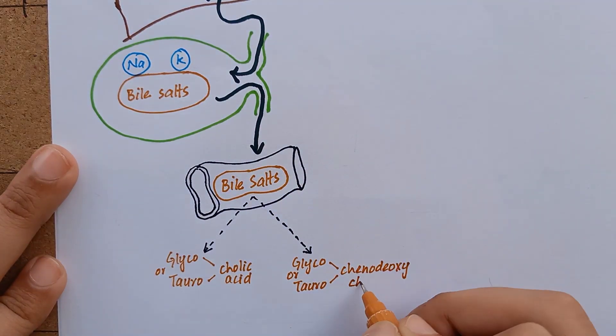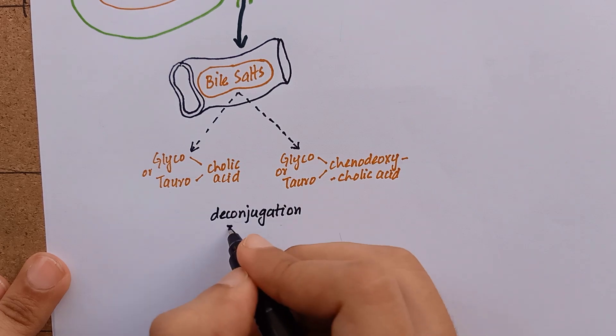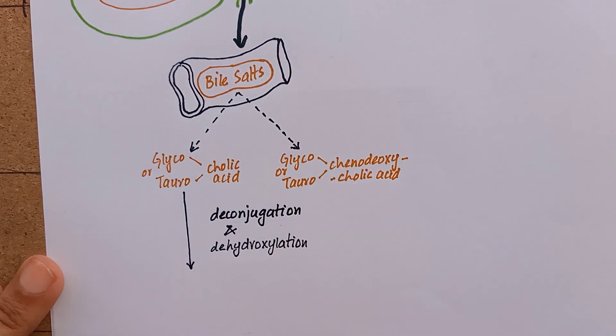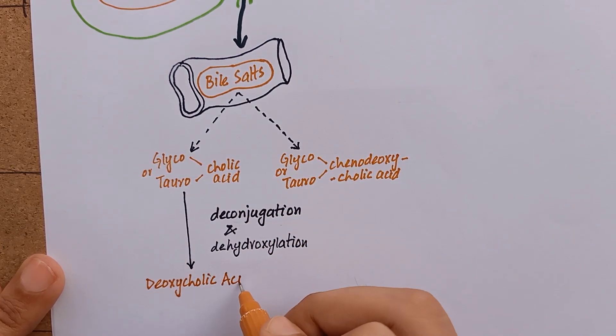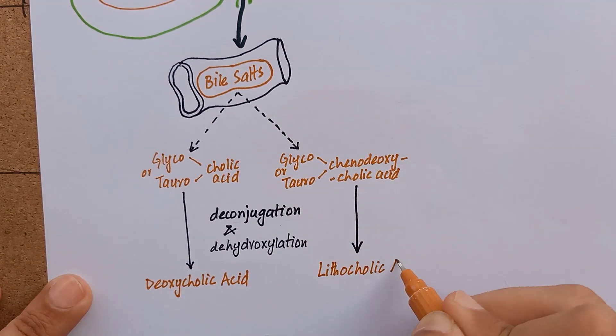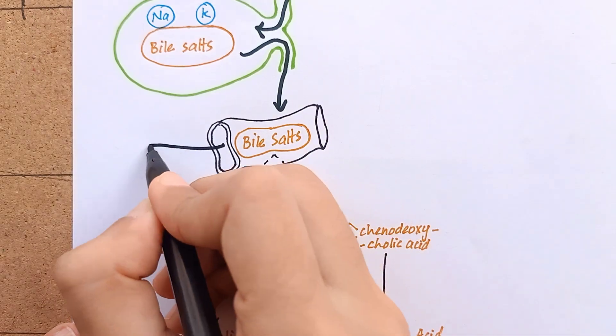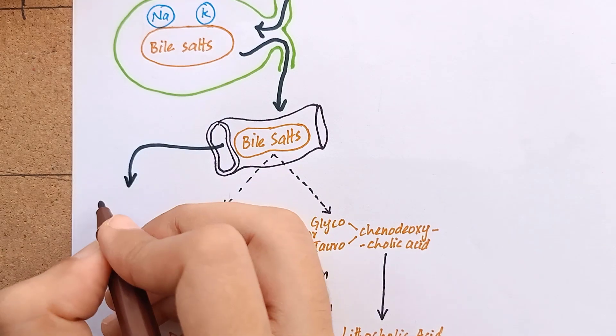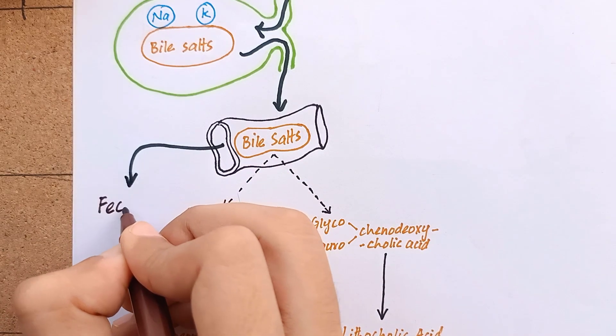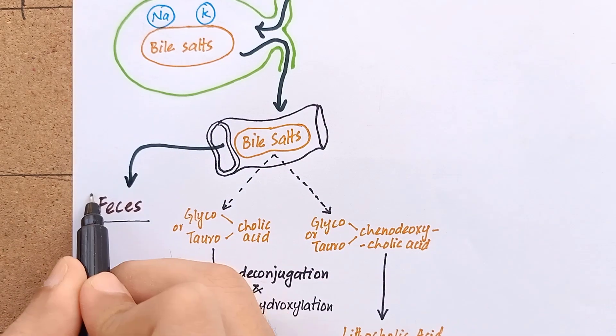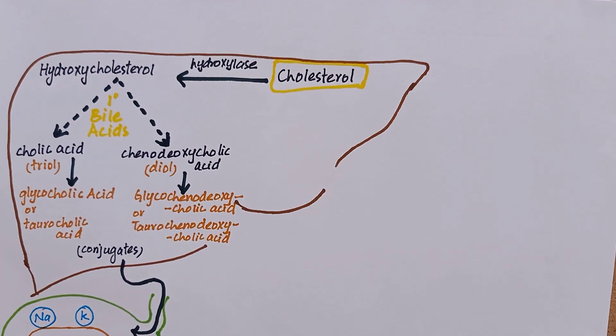A portion of bile salts undergo deconjugation and dehydroxylation in the intestine, forming secondary bile acids which are deoxycholic acid and lithocholic acid. A small portion of bile salts is excreted in feces each day. The fecal excretion of bile salts is the only route for the removal of cholesterol from the body.